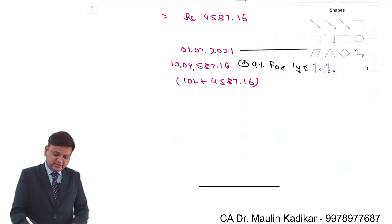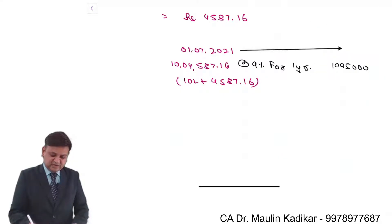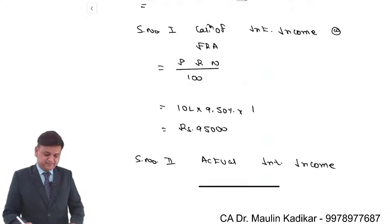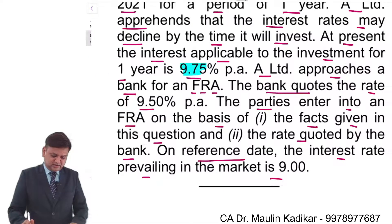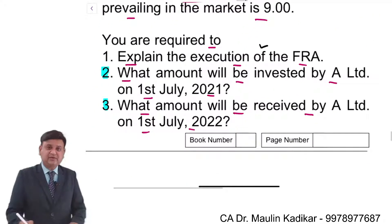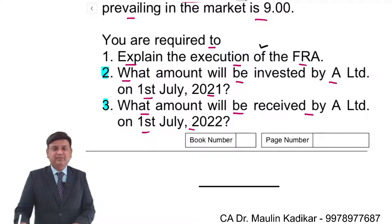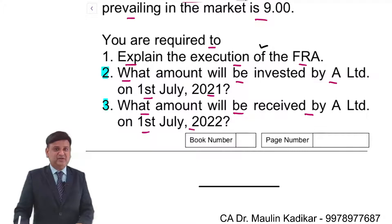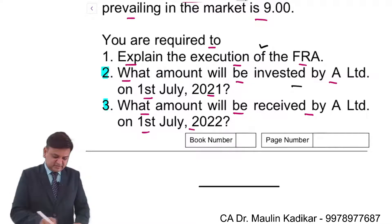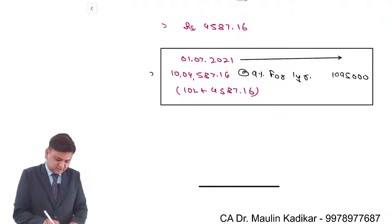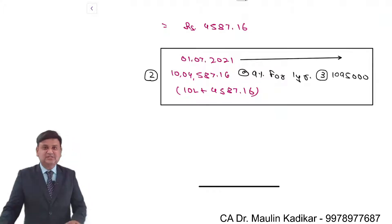After 1 year, the maturity amount of the deposit is ₹10,95,000, meaning the interest income is ₹95,000 — which A Limited should have received as per the FRA. This is how we understand the execution of the FRA. For the first question — execution of FRA — A Limited will receive compensation of ₹4,587.16 because the actual rate of interest is less than the forward rate. For the second question — the amount invested on 1st July 2021 is ₹10,04,587.16. For the third question — the maturity amount is ₹10,95,000.